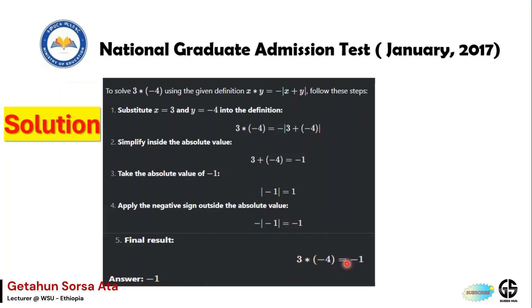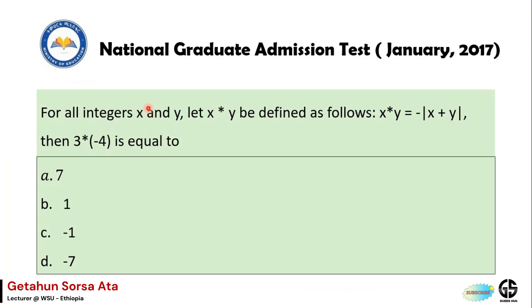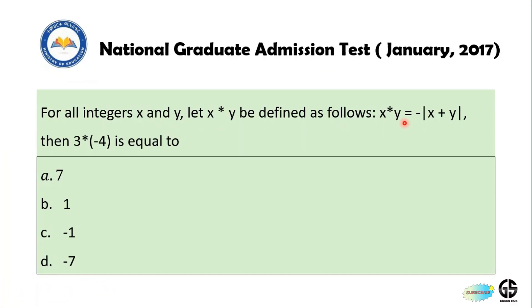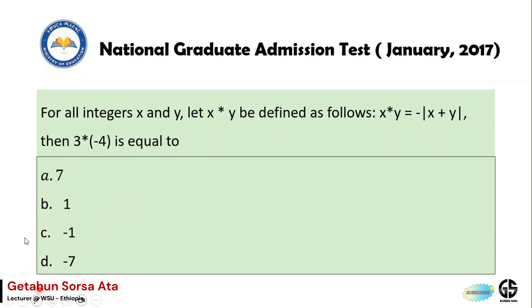Therefore the correct answer is −1. Given the definition x★y = −|x + y|, then 3★(−4) = −1, so the correct answer is c.